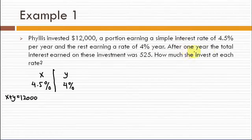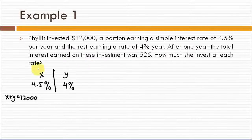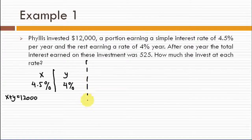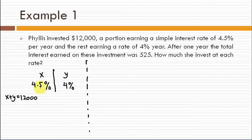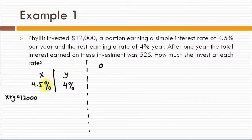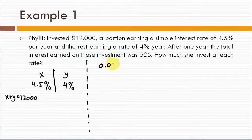After one year the total interest earned on this investment was $525. The interest earned is coming from this plan and that plan. The interest earned from this x dollar will be 4.5% from this amount of money.